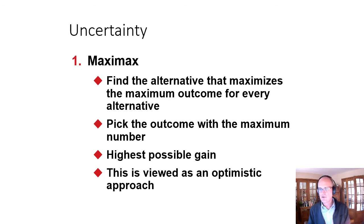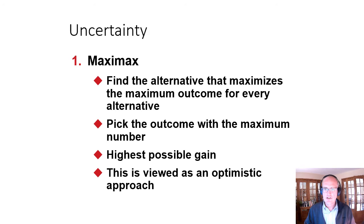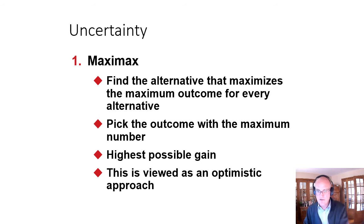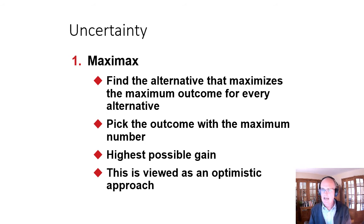We can also use a different set of criteria. We can evaluate a decision tree using the maximax criterion, which is the alternative that maximizes the maximum outcome for every alternative. In this circumstance, we would build a large plant because its return is $200,000 with a favorable market, whereas building a small plant has a best case of only $100,000. That ignores negative outcomes, but if we want to maximize our opportunity for return, that would be maximax — the highest possible gain.